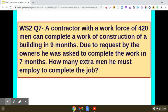A contractor with a workforce of 420 men can complete a work of construction of a building in 9 months. Due to request by the owners, he was asked to complete the work in 7 months. How many extra men he must employ to complete the job?